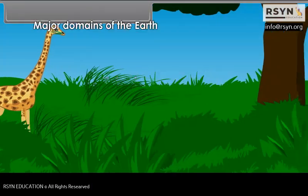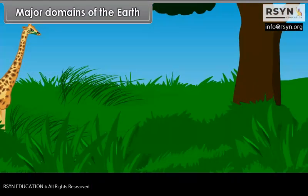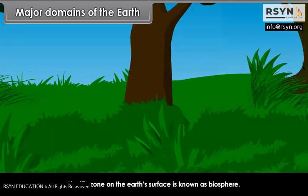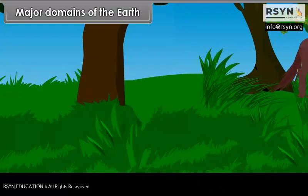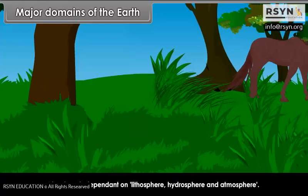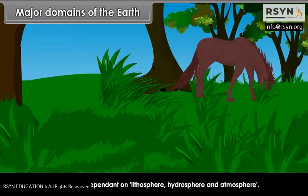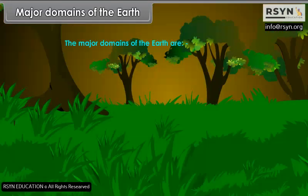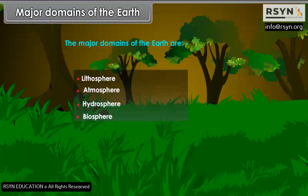The life zone on the Earth's surface is known as the Biosphere. Biosphere is dependent on Lithosphere, Hydrosphere and Atmosphere. These are known as the domains of the Earth. The major domains of the Earth are Lithosphere, Atmosphere, Hydrosphere, and Biosphere.